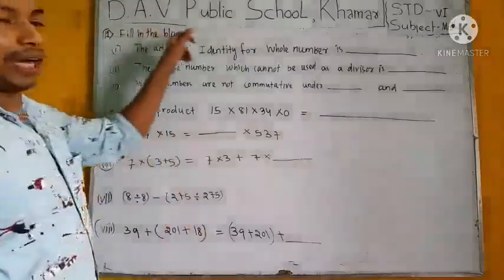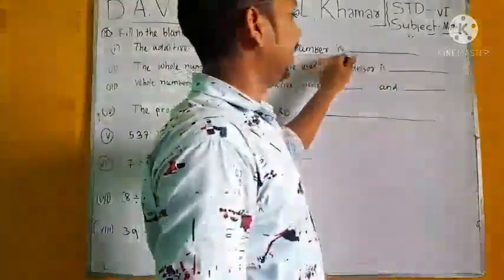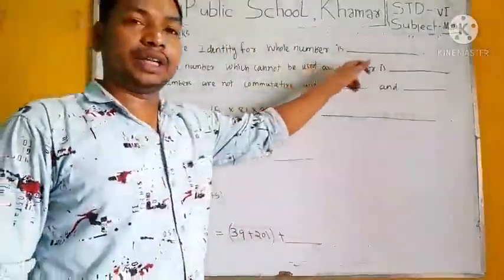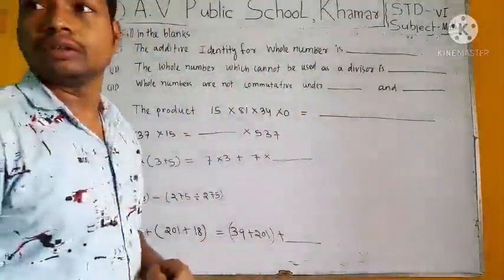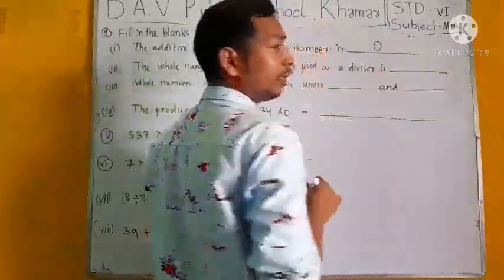First one is fill in the blanks. The additive identity for whole number is... What is the additive identity for whole number? That is zero.